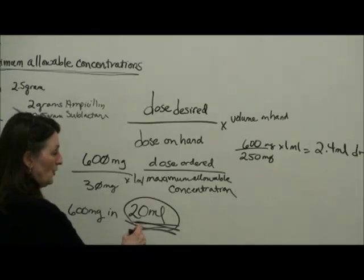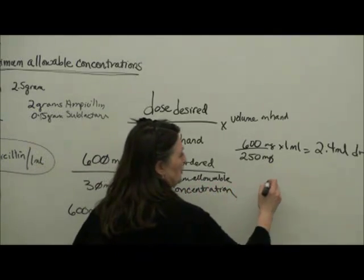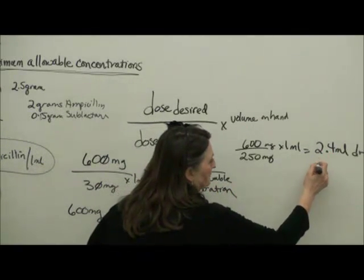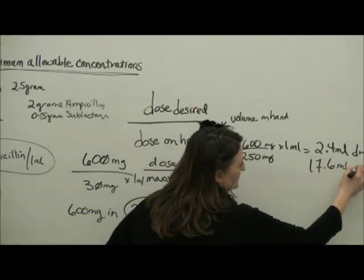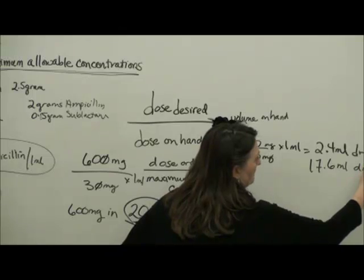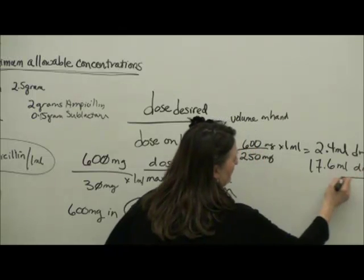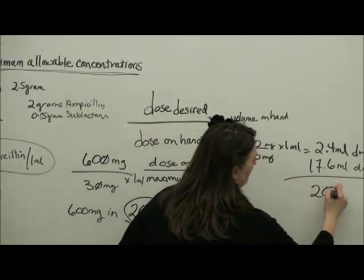Of 20 mL, I am going to add 17.6 mL of diluent. And that becomes 20 mL.